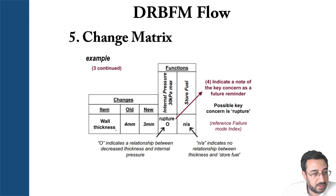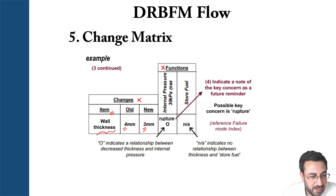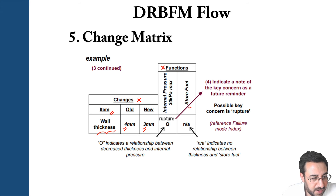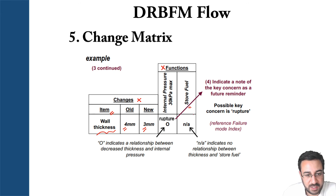Here's a simple change matrix example. For changes, you have a wall thickness component: the old design was 4 mm and the new design is 3 mm. For functions, you have an internal pressure maximum of 30 kPa and a store fuel function. The key question is: does reducing wall thickness from 4 to 3 mm affect the design's ability to handle 30 kPa internal pressure?